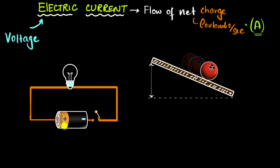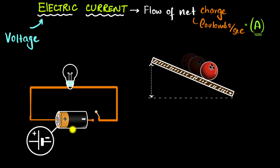When drawing a battery in a circuit, we use a circuit symbol: the longer line represents the positive terminal and the shorter thick line represents the negative terminal. Even though we have a battery in the circuit, right now we don't have a current because the circuit is not closed — there is air in between, and air is an excellent insulator.